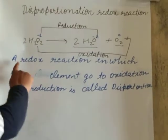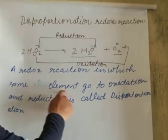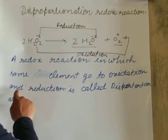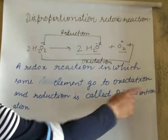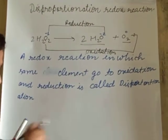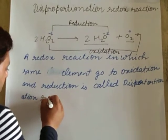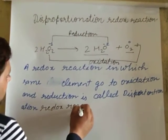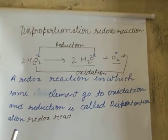So to summarize: a redox reaction in which the same element undergoes both oxidation and reduction is called a disproportionation redox reaction.